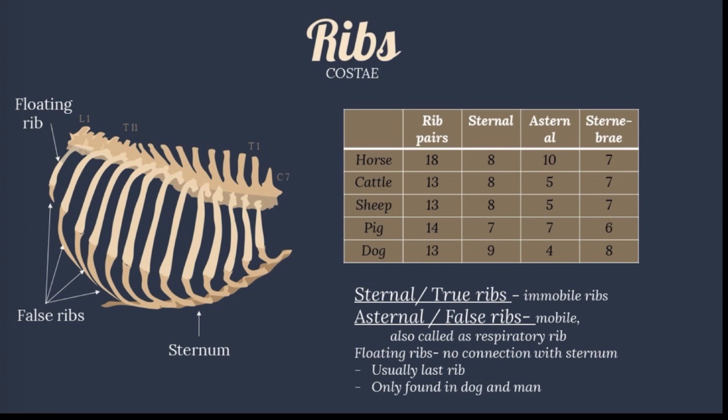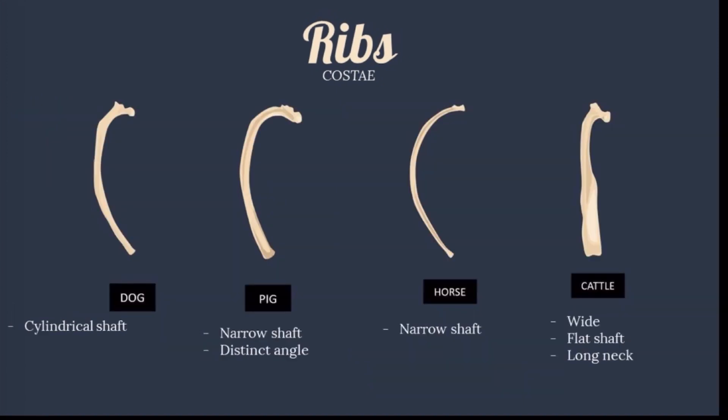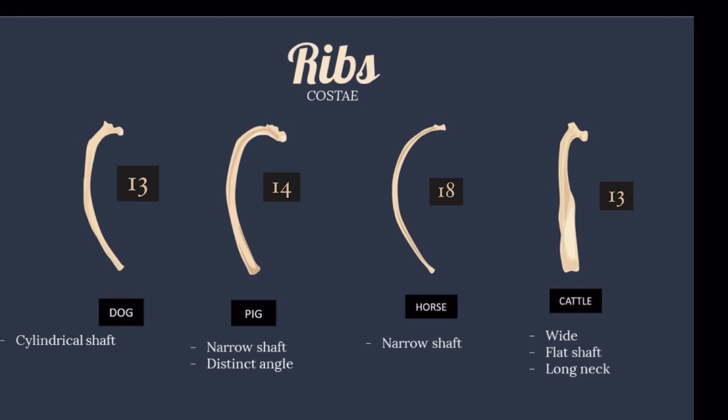The first rib is distinguished because it is the shortest. Comparing the ribs of animals: In the dog, it has a cylindrical shaft. In the pig, it has a narrow shaft with a distinct angle. In the horse, it has a narrow shaft, strongly curved and dorsally turned. In the cattle, it has a wide, flat shaft and long neck. There are 13 ribs in the dog, 14 in the pig, 18 in the horse, and 13 in the cattle.